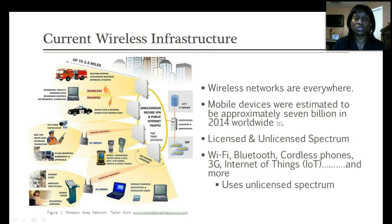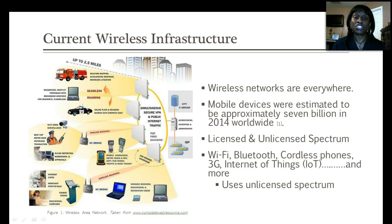In the licensed spectrum, the user pays for use of that spectrum; however, they have private or dedicated use to it. In the unlicensed spectrum, everyone is able to share it — it is a free public spectrum that everyone has access to, and it doesn't cost anything to set up a network on it.